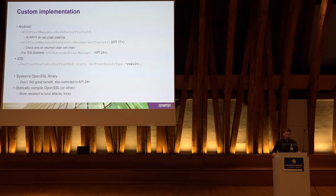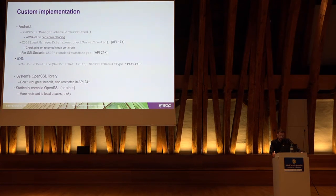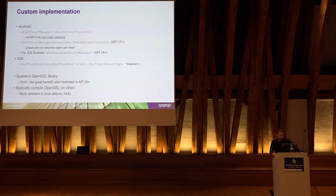If you insist on doing custom implementations with CheckServerTrusted: always do the chain cleaning function. Ideally use the X509TrustManagerExtensions API from API 17 which returns the clean chain. If you want to use SSL sockets, use the Extended Trust Manager which does hostname verification for you. On iOS, be careful with the SecTrustEvaluate API. Some people were using pinning with OpenSSL libraries directly by opening the system OpenSSL library — a very bad approach. You can statically compile OpenSSL into your application and make it resistant with obfuscation and tamper protection, doing all connections over raw sockets — a very extreme thing, but we have clients doing that.